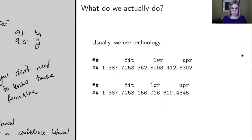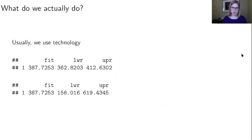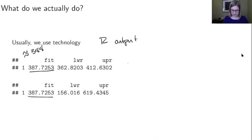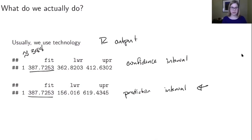So what do we actually do? Since I'm not going to ask you to compute those standard errors, we use technology. This is R output, and it gives the fitted value — about 388 — along with the lower and upper end of the interval. There are two different intervals shown. A question I might ask on an exam is: which is the confidence interval and which is the prediction? The top one is the confidence interval and the bottom one is the prediction interval — we know this because the bottom interval is much wider.